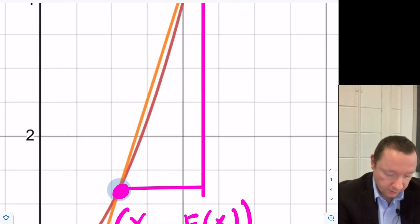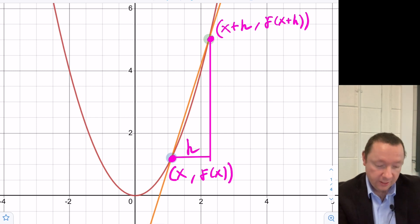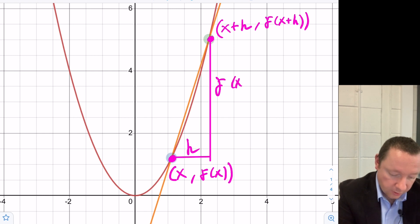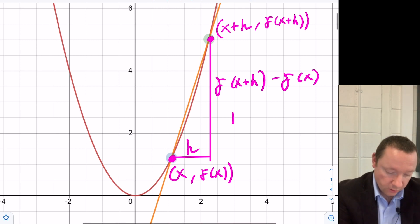Then that means that our vertical distance would be f of x plus h. So looking at our distances, a distance of h, x plus h minus x is h and the vertical distance would be f of x plus h minus f of x. So the gradient of this line between these two points would just be f of x plus h minus f of x all over h.